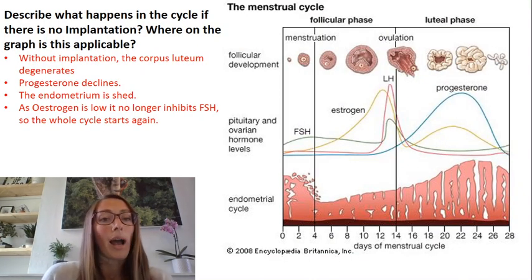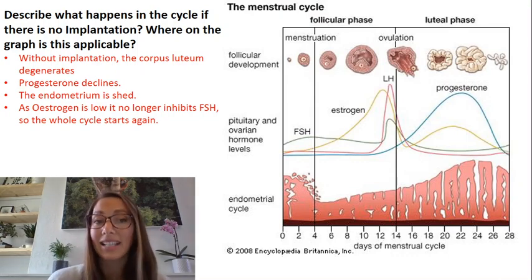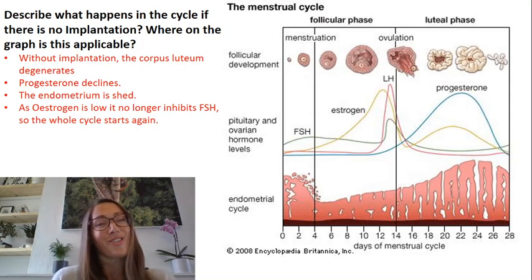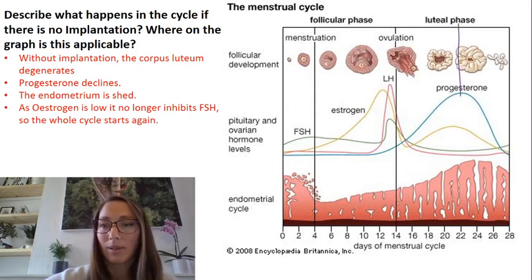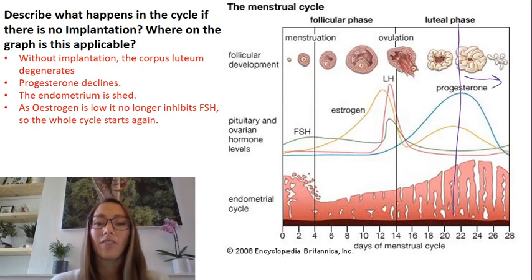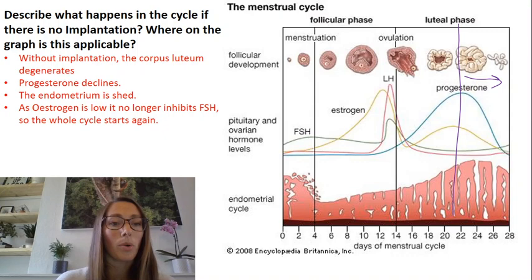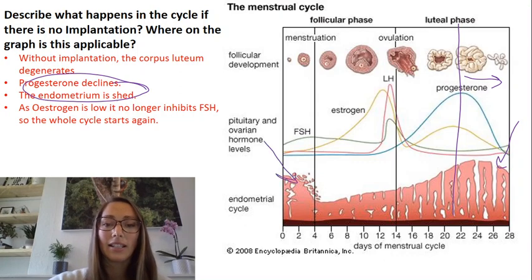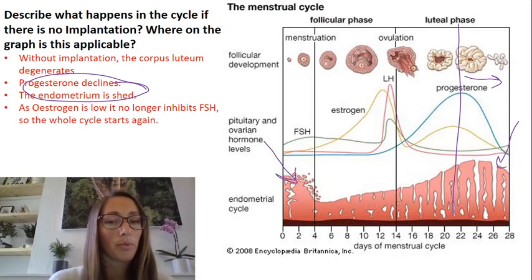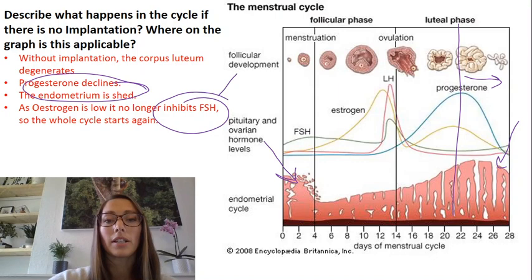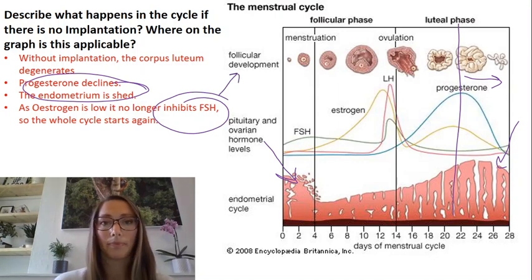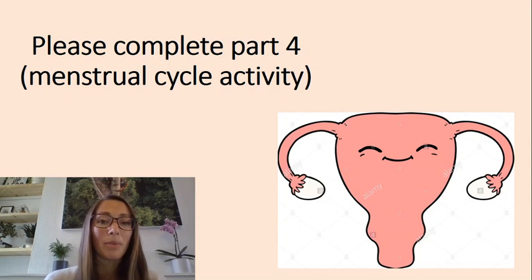One of your questions was to describe what happens in the cycle if there is no implantation. Basically, if there is no fertilised ovum that turns into an embryo, we are looking at this point on the graph where we have a decrease in progesterone. What that means is that the endometrium is shed — we move into the period, or menstrual phase. And because oestrogen is no longer inhibiting FSH, you start to get follicular development again. Please go back to your activity and complete part four.